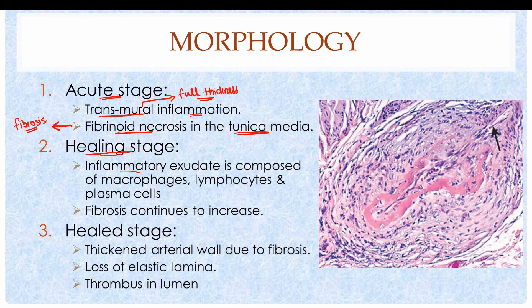The second stage is the healing stage, in which the inflammatory exudate is now composed of macrophages, lymphocytes, and plasma cells — replacing the earlier neutrophils and eosinophils. The fibrinoid necrosis continues to increase in size. The third stage is the healed stage, characterized by thickening of the arterial wall due to excessive fibrosis and fibrinoid necrosis, along with loss of the elastic lamina.